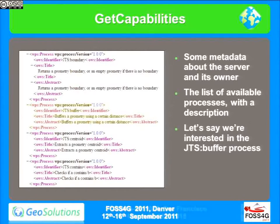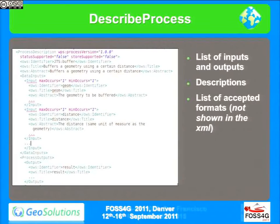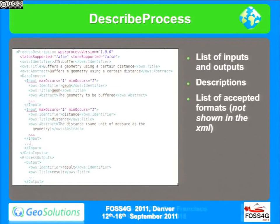Say we are interested in the JTS buffer process — we know it has a title and an abstract that a human can read. We run a DescribeProcess call on JTS buffer, and the output is another XML telling us this process takes one input called Geometry, which is a geometry, and another input which is the distance in meters or in the unit of measure of the geometry, and it generates a result which is the buffer geometry — the inputs and outputs of the process with their description, enough to generate a user interface.